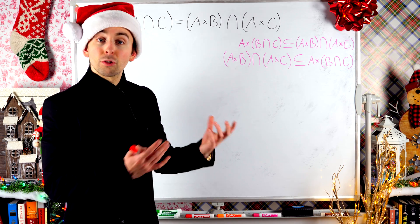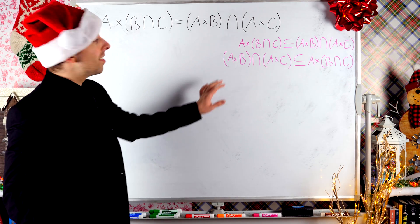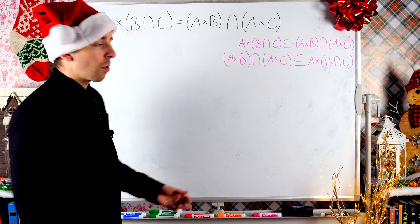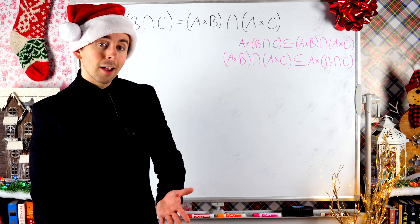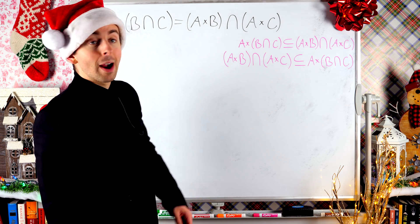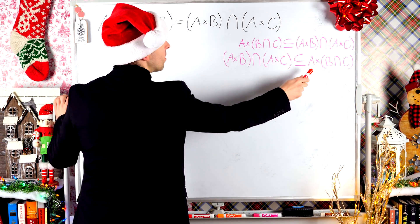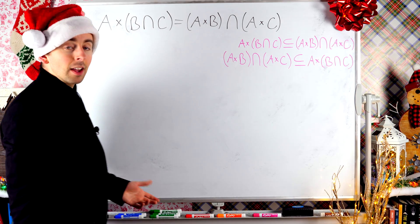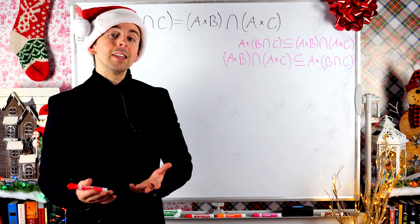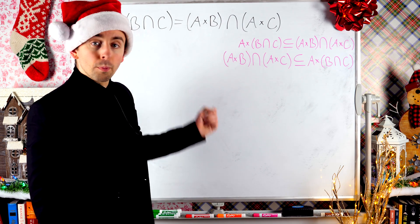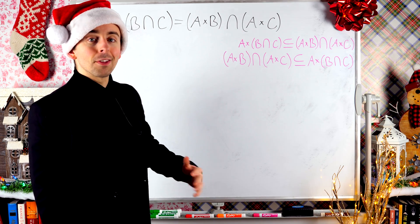The basic structure of this proof is that we've got to show the set on the left is a subset of the set on the right — that's what we're going to do first. Then we have to prove that subset relation in the other direction: the set on the right is a subset of the set on the left. If both sets are subsets of each other, then they've got to be equal sets. So let's start with this one — we'll prove that the set on the left is a subset of the set on the right.